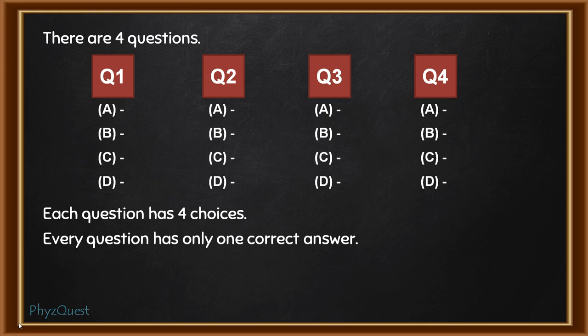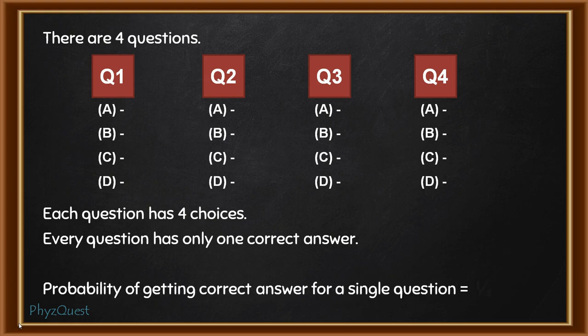First of all, we have to calculate what would be the probability of getting the correct answer for a single question by random guessing. When you don't know the answer and you do a random guess, you have 4 choices and one of them is correct. So the probability of getting the correct answer will be 1 by 4.